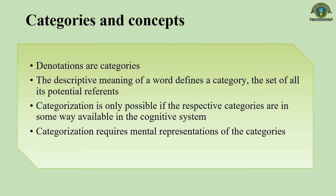When we encounter an object, our cognitive operators will produce a preliminary description of it, which consists of what we perceive — its size, shape, color, or smell. Then we compare this description with the concepts we have in our mind. If this description happens to match with the concept of dog, the object will be categorized as a dog.